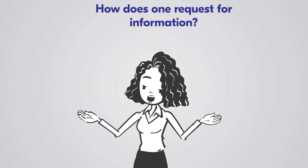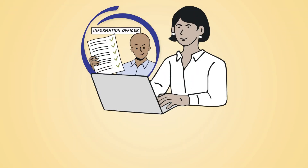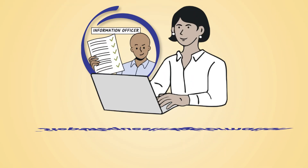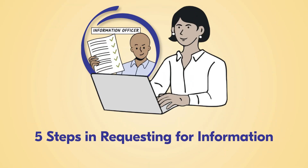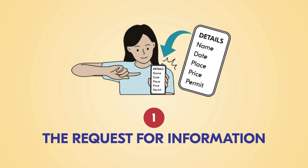How does one go about requesting for information? According to the Act, there are five steps involved when requesting for information. Step one: making a request for information to the information officer of the public or private entity.